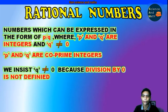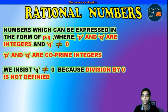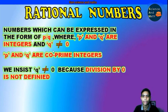The third point: we insist Q is not equal to 0 because division by 0 is not defined. So we cannot have denominators as 0 — such fractions are not defined; they do not exist. Hence we insist that Q is not equal to 0.